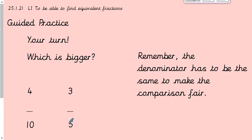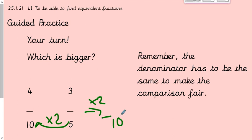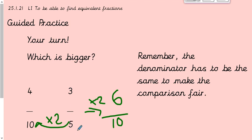Times five by two to get ten, so we times this fraction by two: five times two is ten, three times two is six. Therefore this fraction is bigger because it's six tenths rather than four tenths, and six is bigger than four. It's just remembering the different steps. You can only times or divide the numbers to make fractions equivalent — you can't just add a number to each, because that wouldn't make them equivalent.